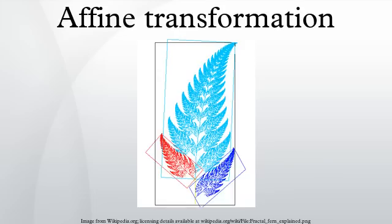If an origin is chosen and O' denotes its image, then this means that for any vector x, f(x) is defined accordingly. If an origin is also chosen, this can be decomposed as an affine transformation. The conclusion is that, intuitively, an affine map consists of a translation and a linear map.